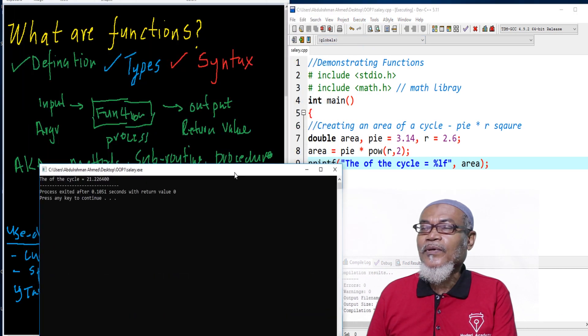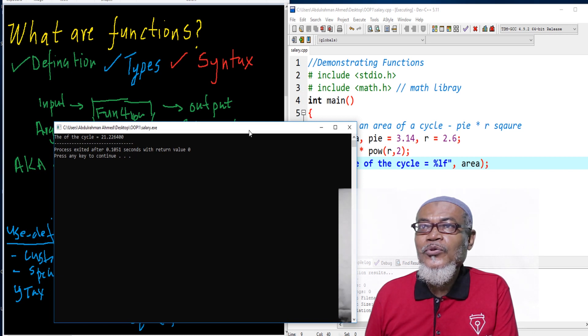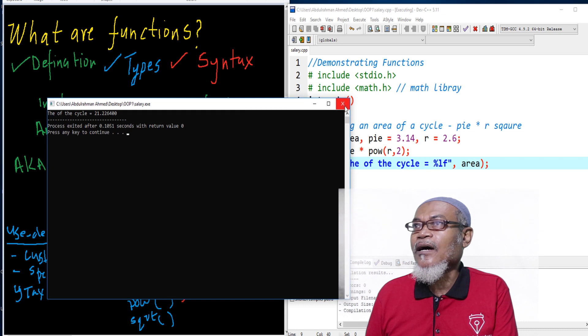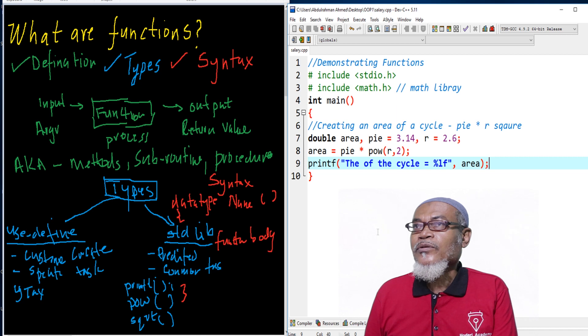Yes, when we execute this particular program, we are seeing here the area of a cycle. It is actually equal to 21.226400. This is how we can demonstrate a function.